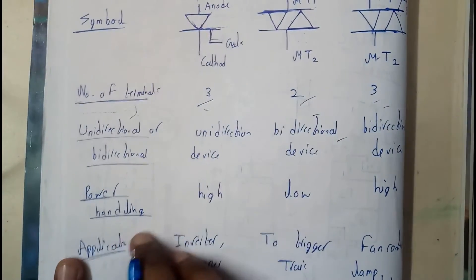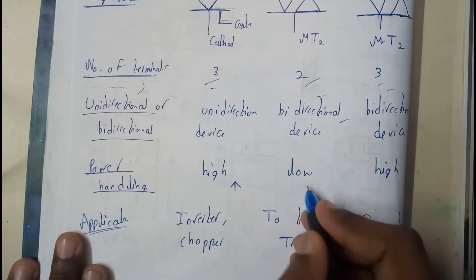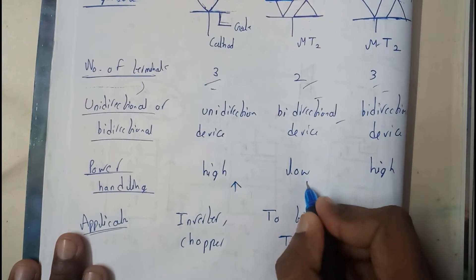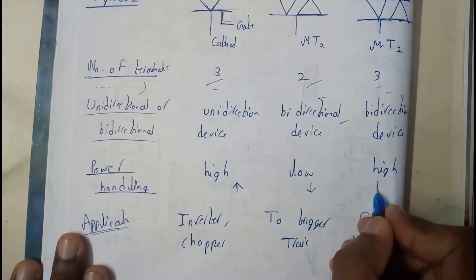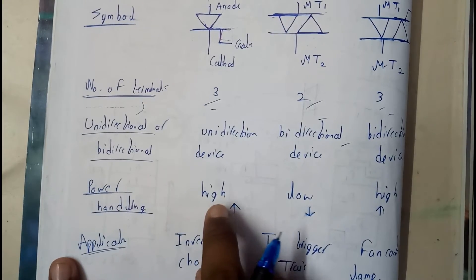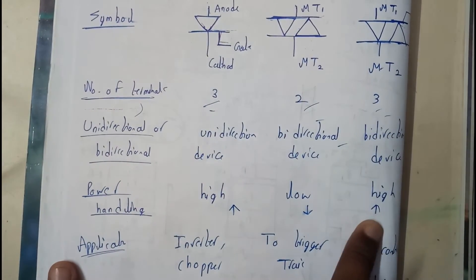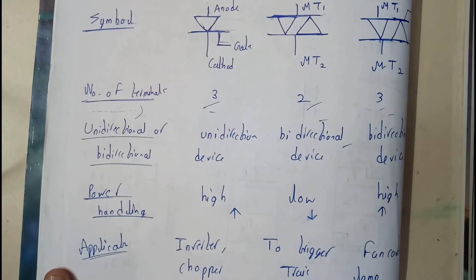Power handling in SCR is high, in DIAC is low, and in TRIAC is high. You can assume that it depends on the terminals. For 3 terminals, power handling is high; for 2 terminals, it's low. That's a small trick I've noticed.